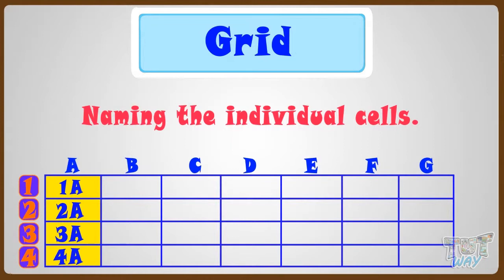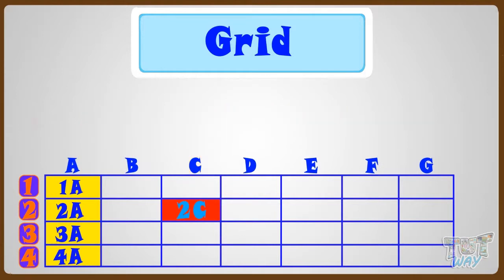Now let's name this cell, which is shown red in color. Its row name is 2, and its column name is C, so it can be named as 2C. Similarly, we can name any cell using its row name and column name.